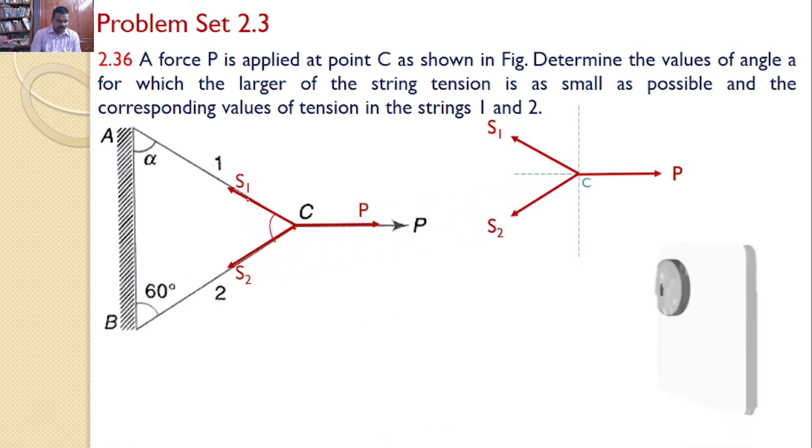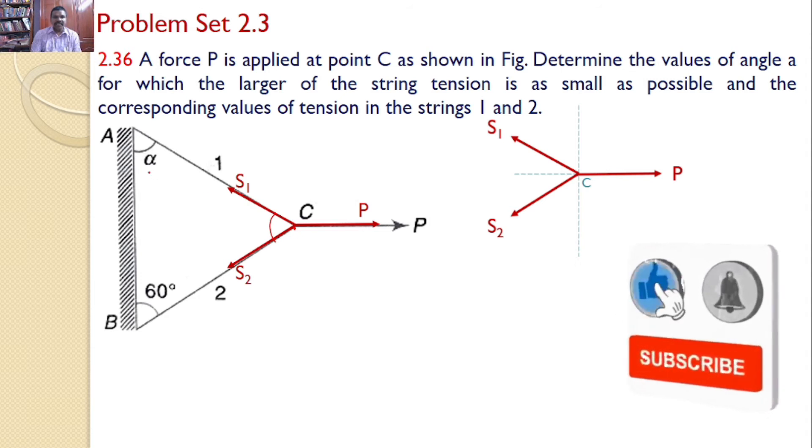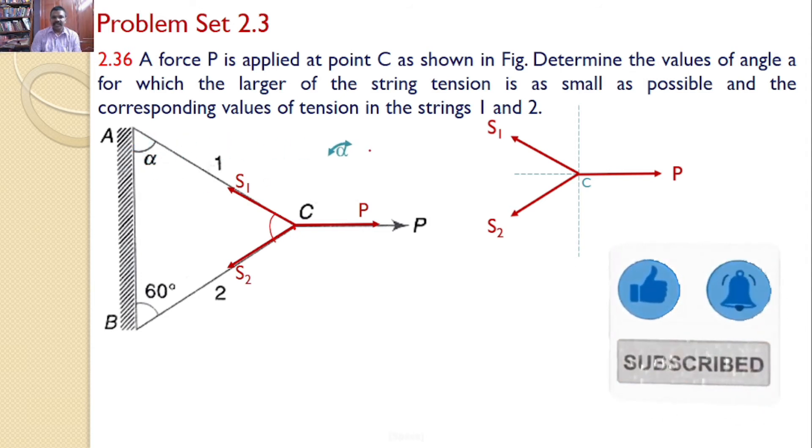Now the string 1 makes an angle alpha with the vertical. So I can say that the S1 makes an angle alpha with the vertical. Similarly, string S2 makes an angle 60 degrees with the vertical. Hence S2 makes an angle 60 degrees with the vertical.